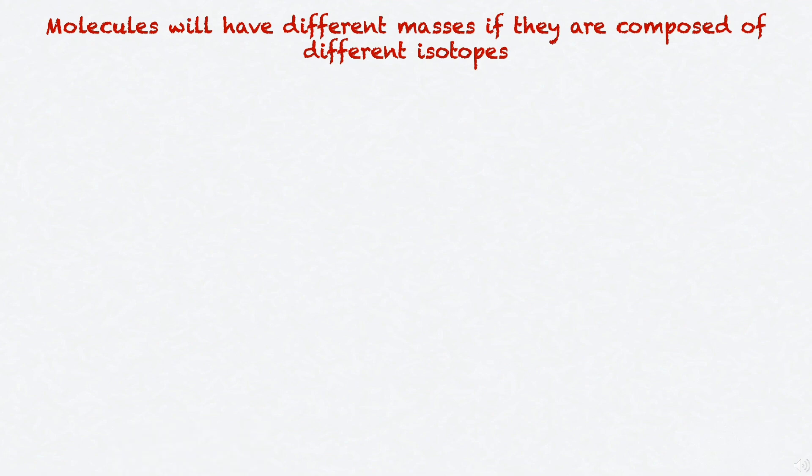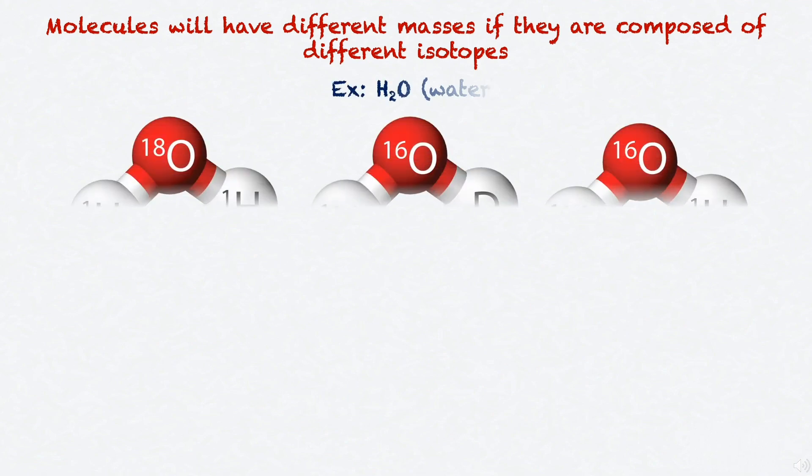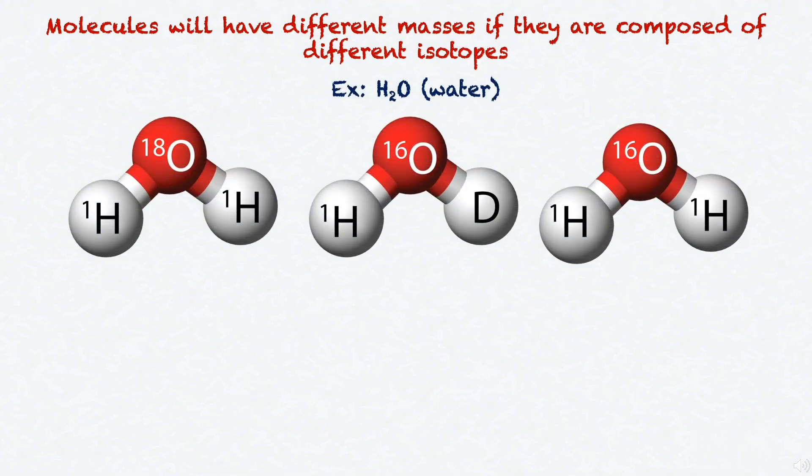Now, each of these heavy and light isotopes may be part of molecules, which will have different masses according to the isotopes they are composed of. For example, some of the arrangements of isotopes in water produce compounds with different masses. For instance, water with 2 hydrogens with masses of 1 and 1 oxygen with mass 18 has a total mass of 20. Water with 1 hydrogen with mass 1, 1 deuterium with mass 2, and 1 oxygen with mass 16 has a total mass of 19. And finally, water with 2 hydrogens with masses of 1 and 1 oxygen with mass 16 has a total mass of 18.